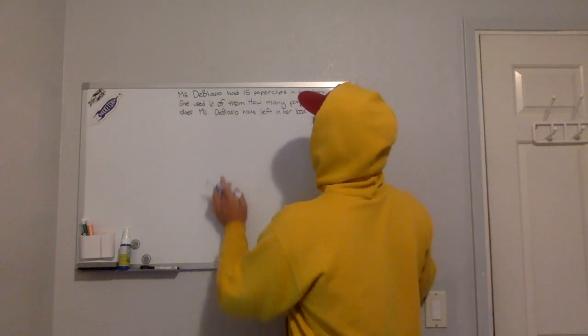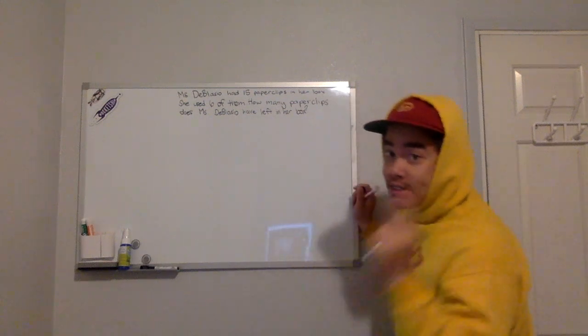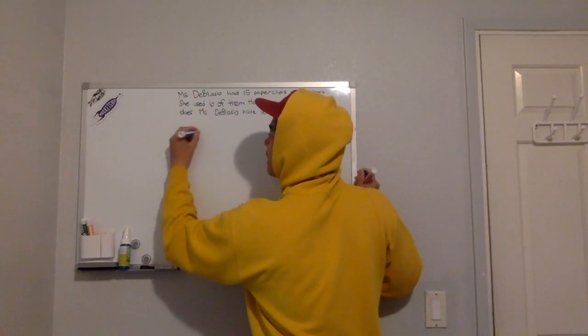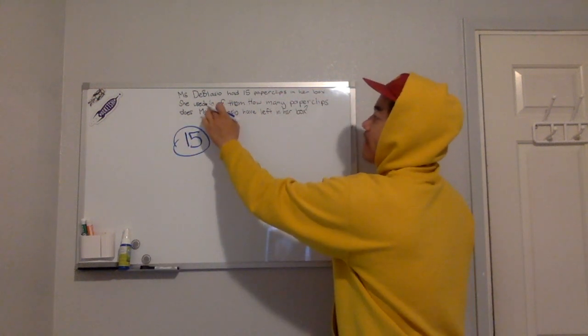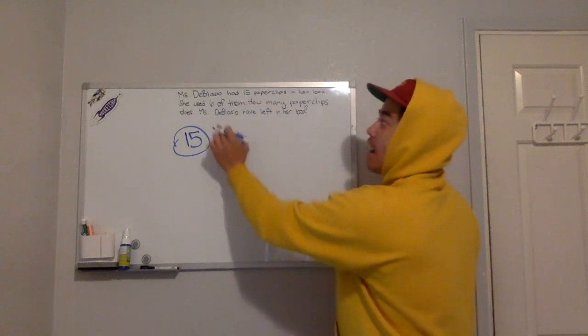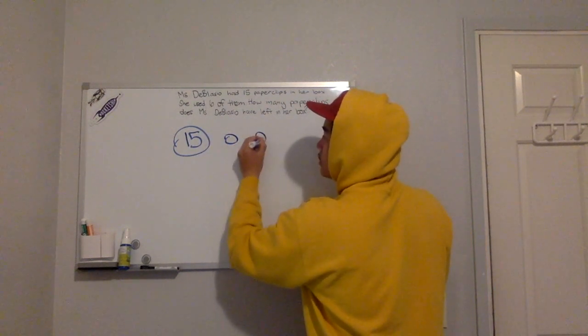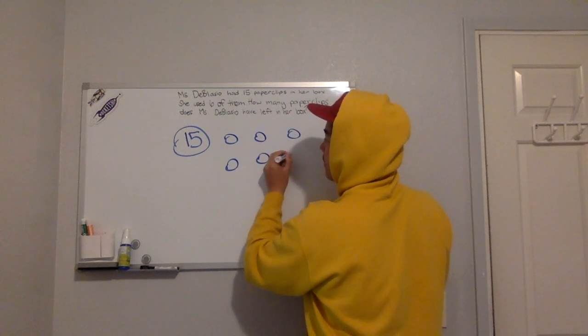So counting down, we put the big number in our head. The big number is 15. So we put the 15 in our head. And we're going to count down how many times? We're going to count down six times. So 1, 2, 3, 4, 5, 6.